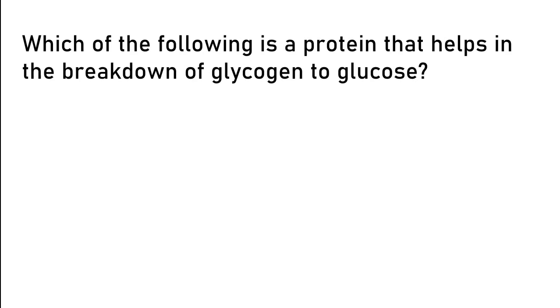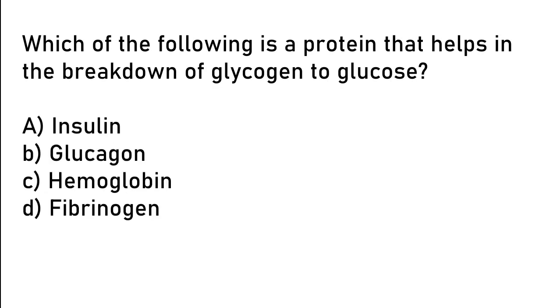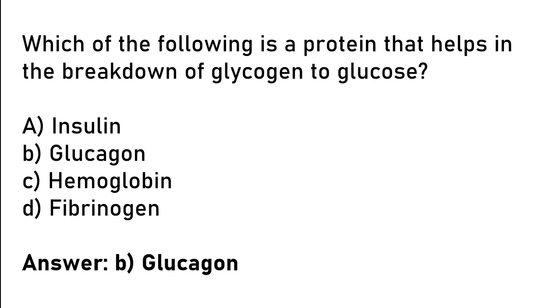Which of the following is a protein that helps in the breakdown of glycogen to glucose? Insulin, glucagon, hemoglobin, fibrinogen. So the correct answer is option B. Glucagon.